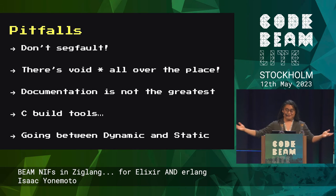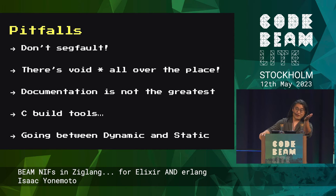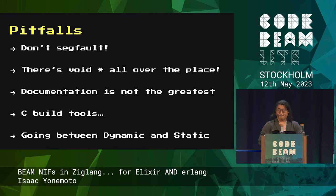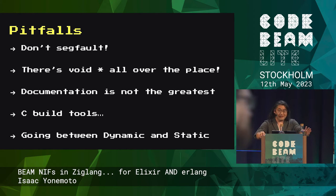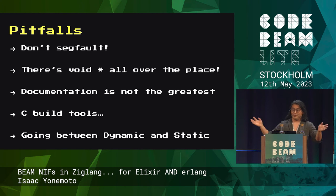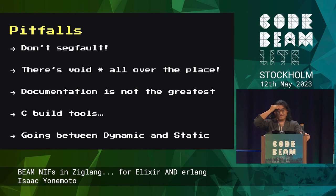Here are some pitfalls of making NIFs. First, don't ever segfault — that will breach your failure domain concepts inside the Beam. All of your stateful data that the Beam is so good at managing will just disappear. There's void pointers all over the place — this is type erasure — and it's very dangerous to manage void pointers. It's a good way to segfault and lose information. The documentation for C NIFs in the OTP documentation is not the greatest. And C build tools can be really tricky.